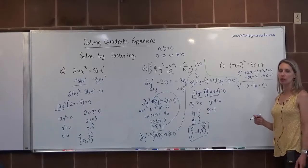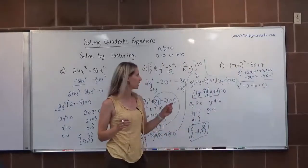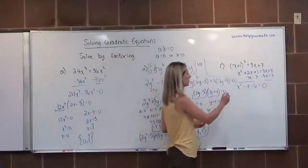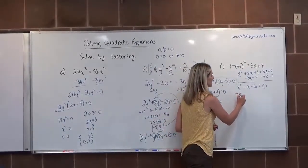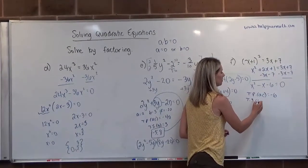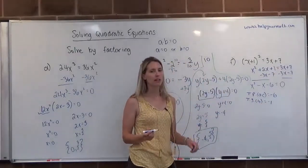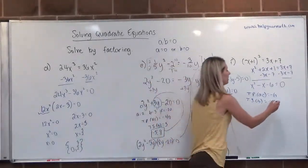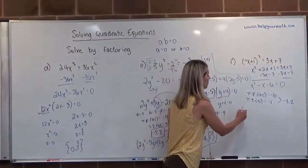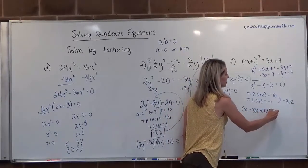Because this is a trinomial with a leading coefficient of 1, we can use the shortcut. The target product is a times c, which would be 1 times negative 6. And the target sum, which is b, would be negative 1. Two numbers that multiply to negative 6 and add up to negative 1 would be negative 3 and positive 2. So we can plug those right in. That would be x minus 3 times x plus 2 is equal to 0.